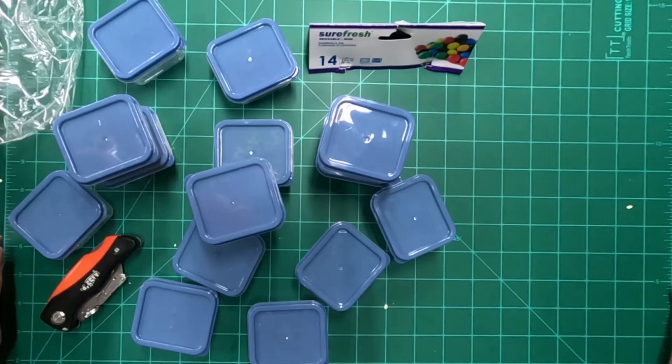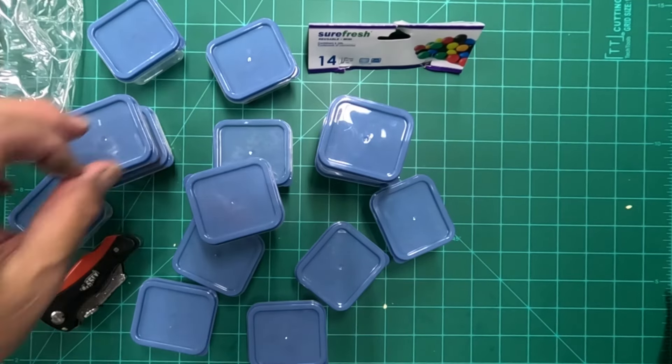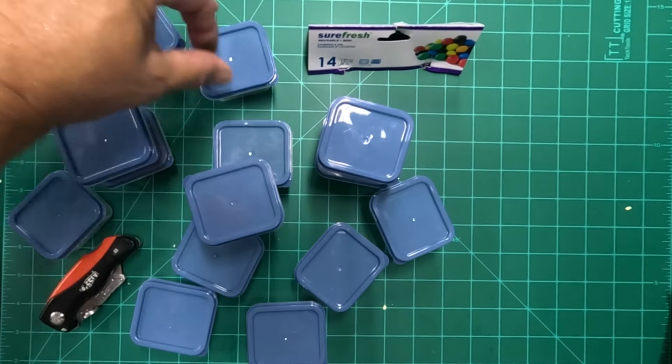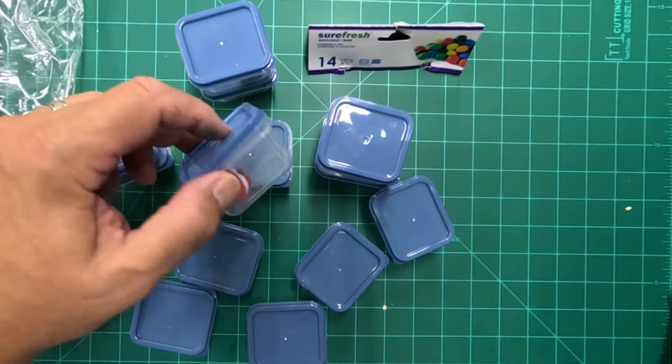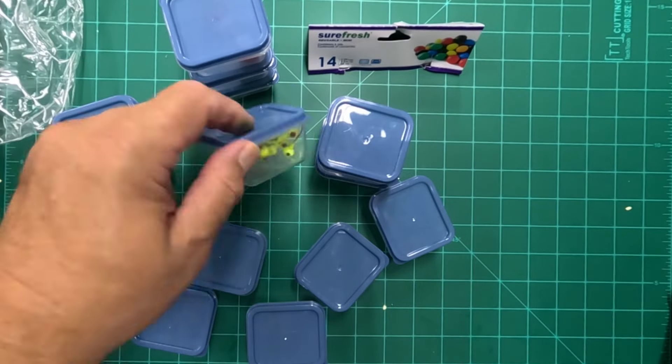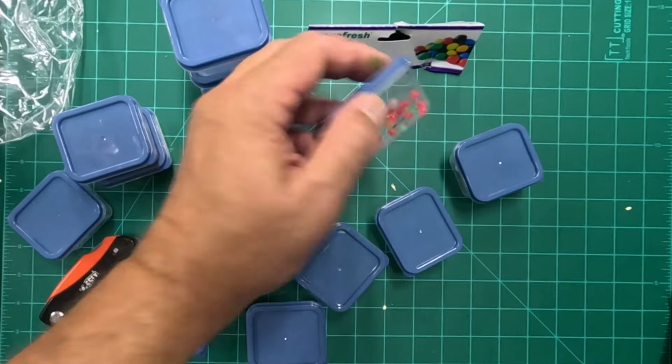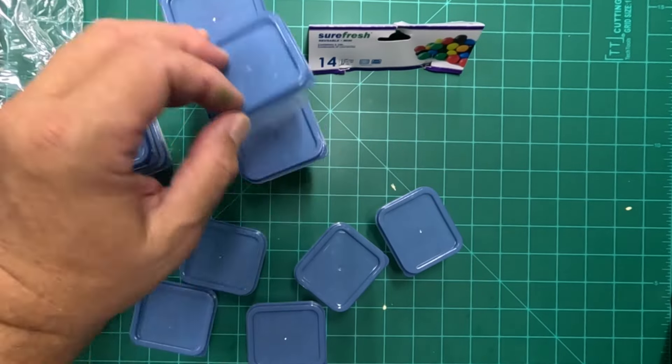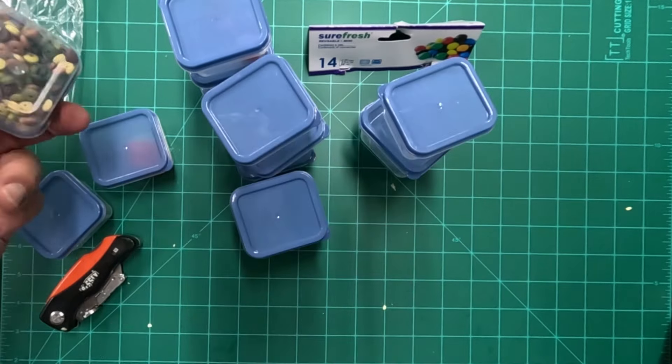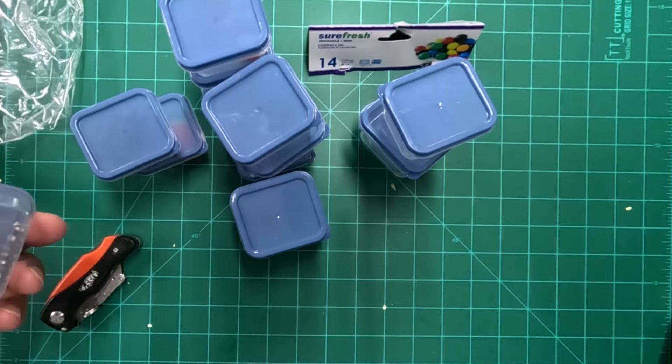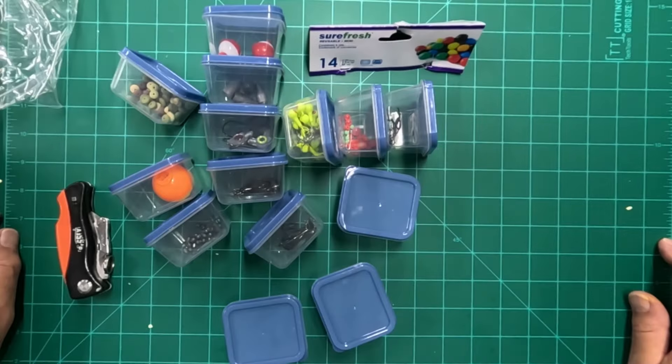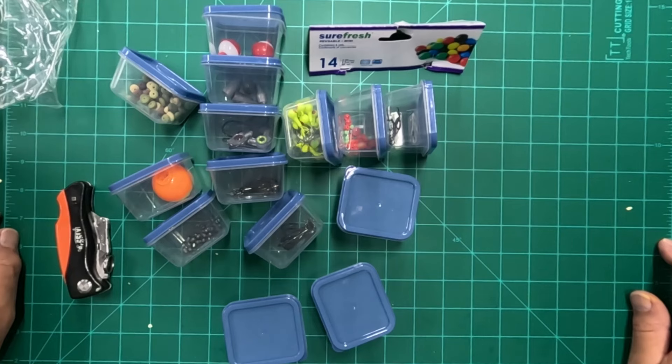There's 14 of these in a package for $1.25, and look what I've got in here. I've got jig heads, sinkers, bobbers, more jig heads, I got beads, hooks, hooks, more beads, more bobbers, split shots. Look how much these will hold for $1.25. They're going to work nicely in my backpack tackle box.